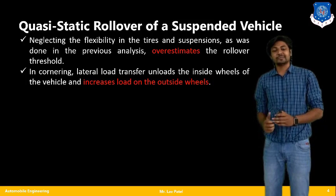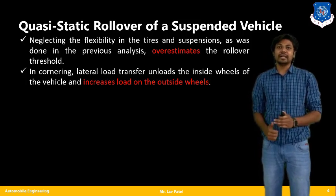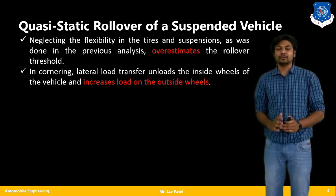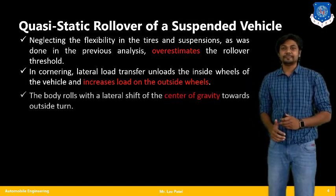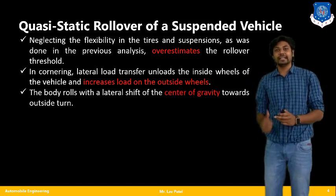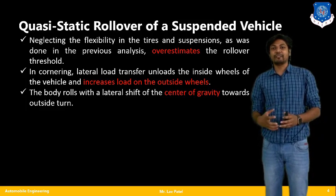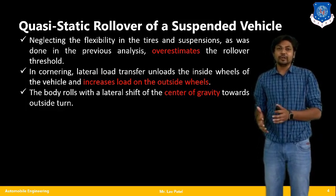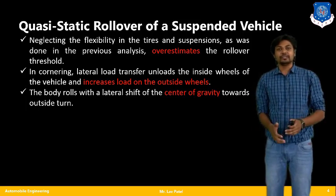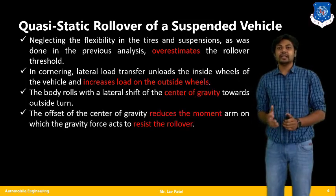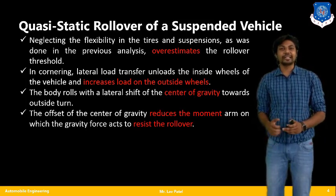In a suspended vehicle, the lateral force transfers load away from the inside wheels and increases the load on the outside wheels. Moving further, the body rolls with a lateral shift of the centre of gravity towards the outside wheel. This offset of the centre of gravity reduces the moment arm on which the gravity force acts to resist the rollover.